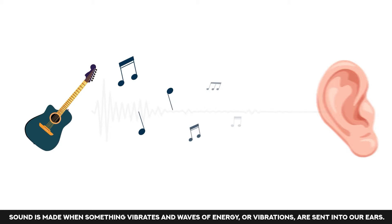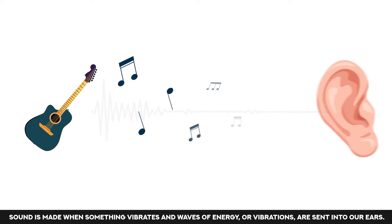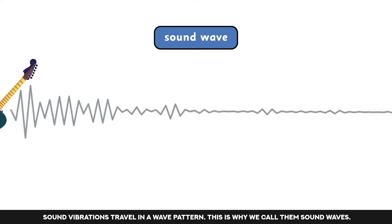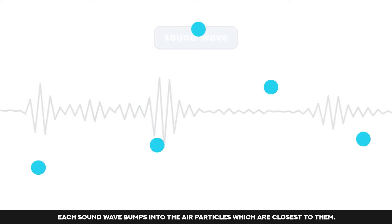Sound is made when something vibrates and waves of energy or vibrations are sent into our ears. Sound vibrations travel in a wave pattern — this is why we call them sound waves. When an object vibrates, it creates sound waves.